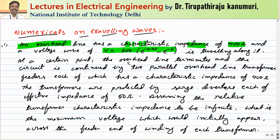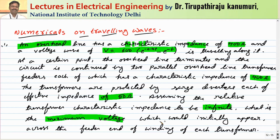At a certain point the overhead line terminates and the circuit is continued by two parallel overhead line transformer feeders, each of which has a characteristic impedance of 400 ohms. The transformers are protected by a surge diverter each of an effective impedance of 50 ohms. Assuming the relative transformer characteristic impedance to be infinite, we have to calculate the maximum voltage which would initially appear across the feeder end winding of each transformer.